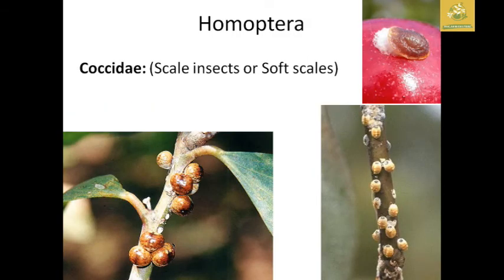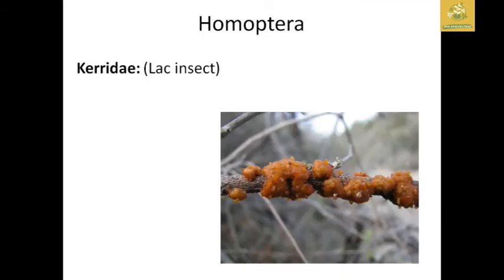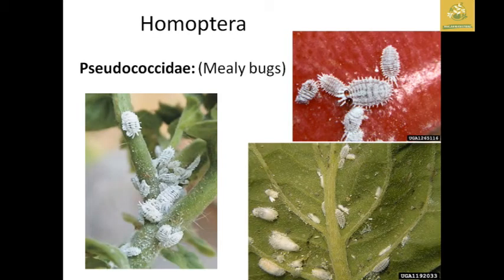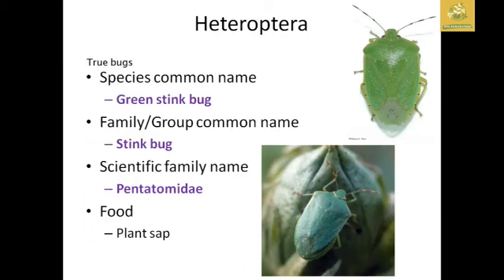Coccidae includes soft scale insects which suck sap from different plants. Kerridae is the lac insect family, which has economic importance in producing lac, waxes, etc. Mealybugs (Pseudococcidae) occur in groups, and their presence weakens plants.